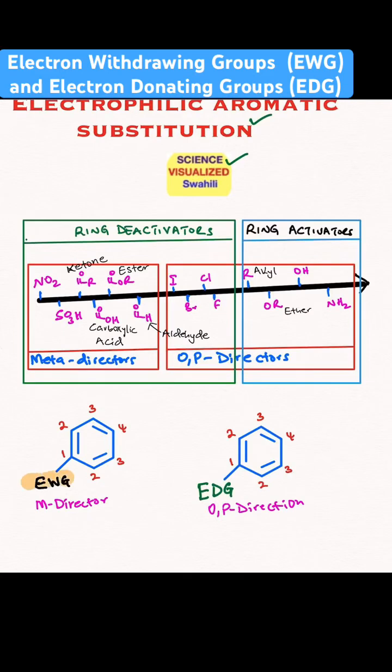You have a benzene ring with an electron withdrawing group at that position. The electron withdrawing group is a meta director. So that means it's going to direct the incoming group to the meta position.